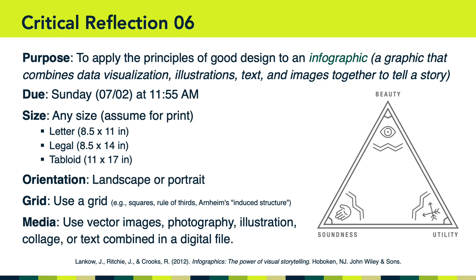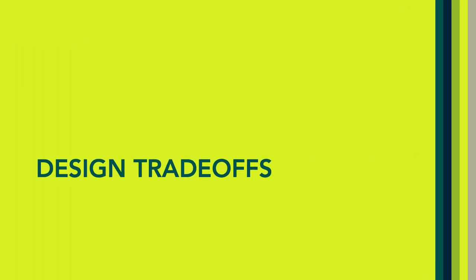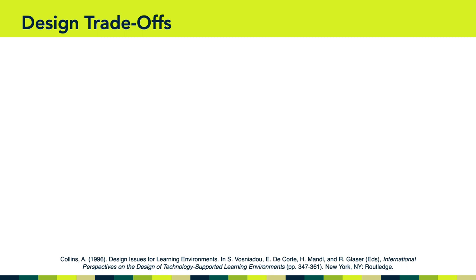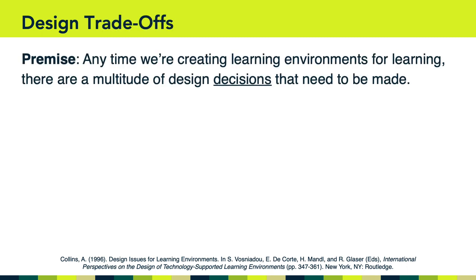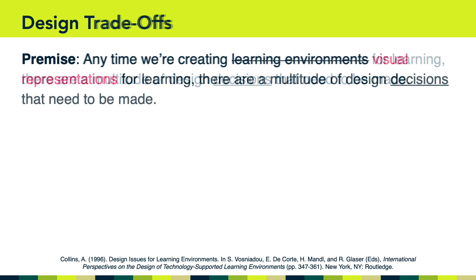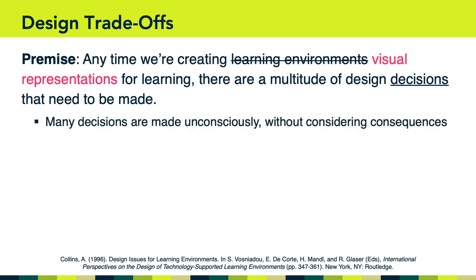Our next topic is the concept of design trade-offs, which was actually introduced by Alan Collins, a famous learning scientist from Northwestern University. In a rather famous article from 1996, Collins introduced the premise that anytime we're creating learning environments for learning, there are a multitude of design decisions that need to be made. In our field we are often designing graphics for learning environments, so we might replace 'learning environments' with 'visual representations.' The premise then becomes: anytime we're creating visual representations for learning, there are a multitude of design decisions that need to be made.